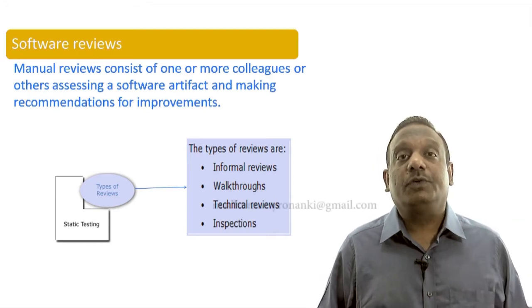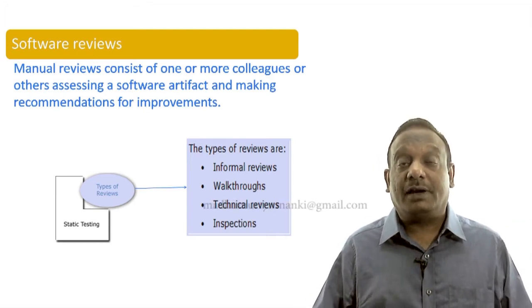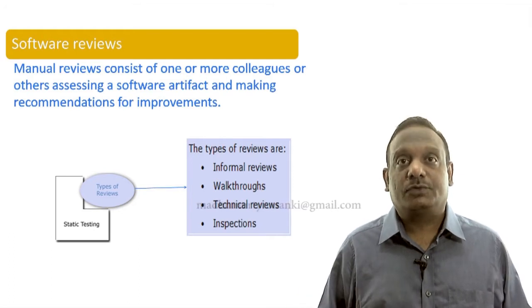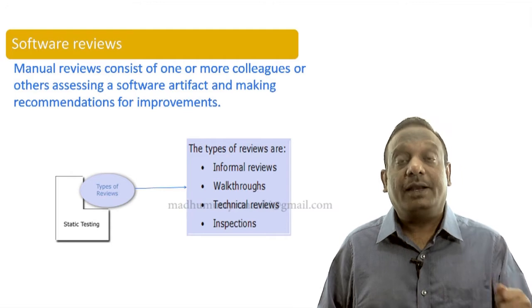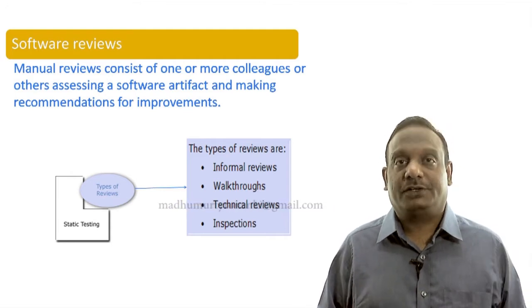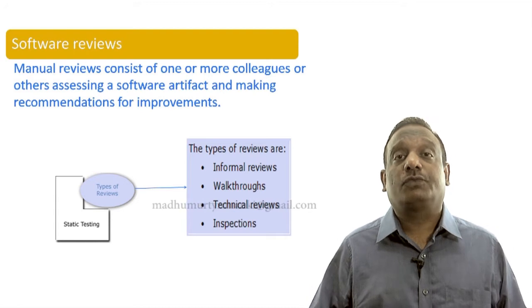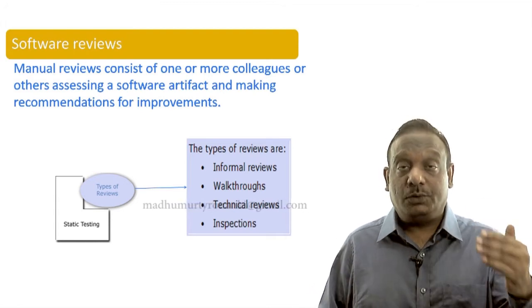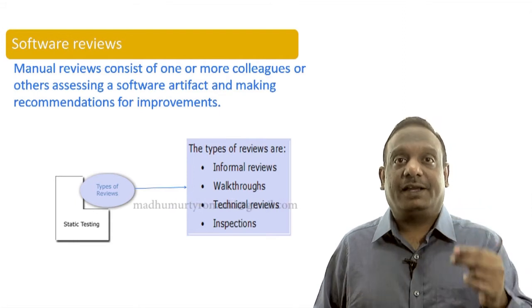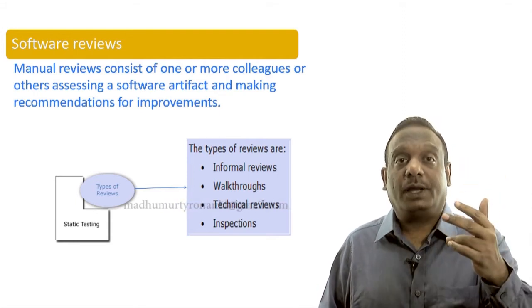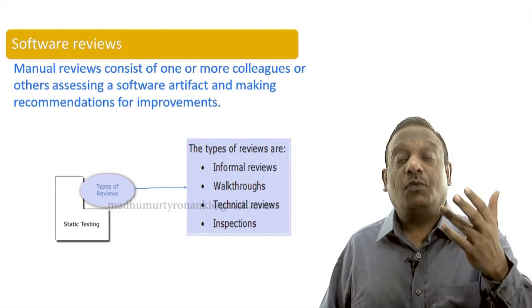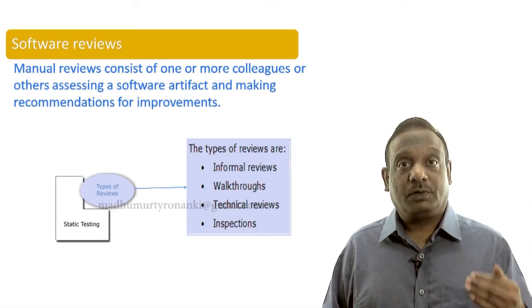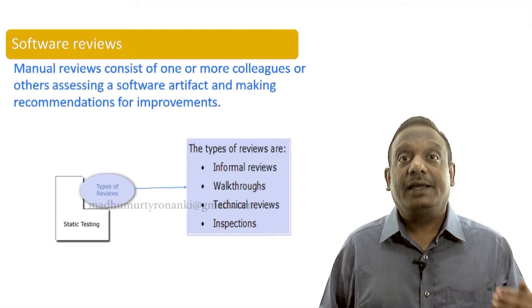The third type of review is called technical reviews or peer reviews. These are semi-formal reviews — unlike informal reviews, there are some rules and regulations if you are doing technical reviews. The fourth type is called inspection, and these are the most formal types of review. So static techniques can be divided into two types: manual reviews conducted by people, with four types — informal reviews, walkthroughs, technical reviews, and inspections.